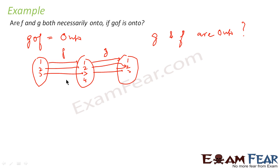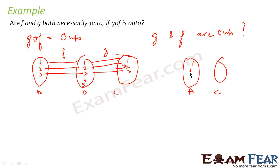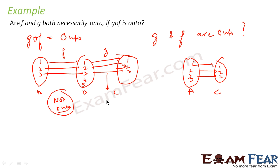Even if you add an extra element 5 here, this will not impact the composite system. This is set A, this is B, and this is C. The composite function from A to C will still have elements 1, 2, 3 only, even if you add more elements in between.